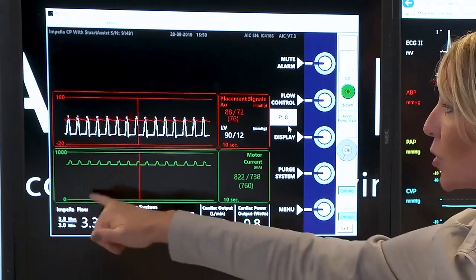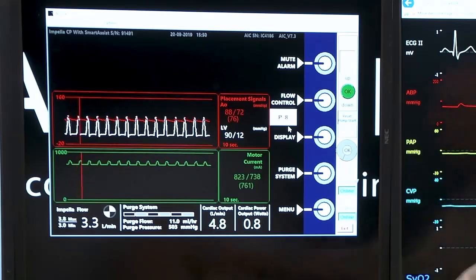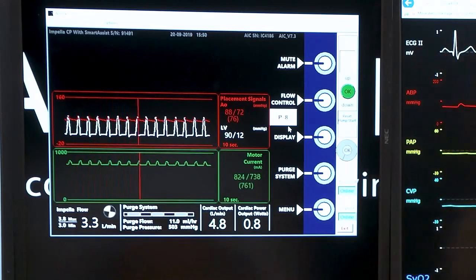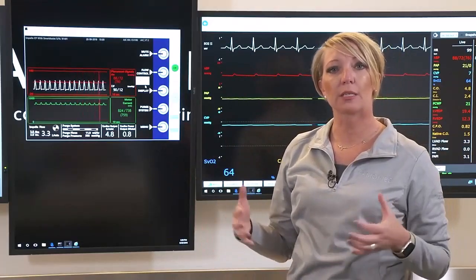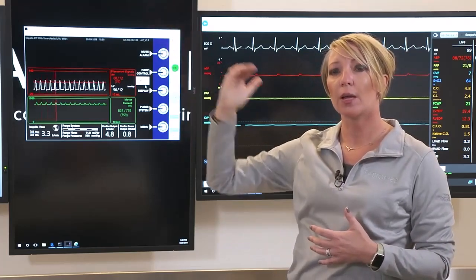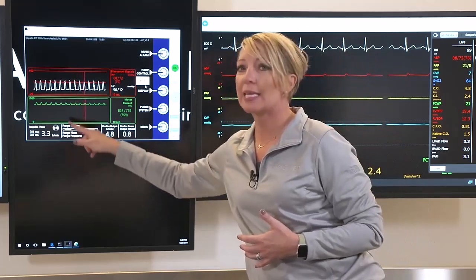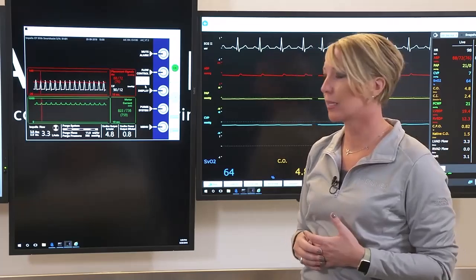You'll notice that the larger number here is giving the average amount of flow at that given P level. So max flows 3.8, min flows are going to be 3. So even though this is a continuous flow device, we still have the native heart working as well. So we will have a max flow and a min flow during the cardiac cycle. This is just the average amount of additional flow the Impella is giving.